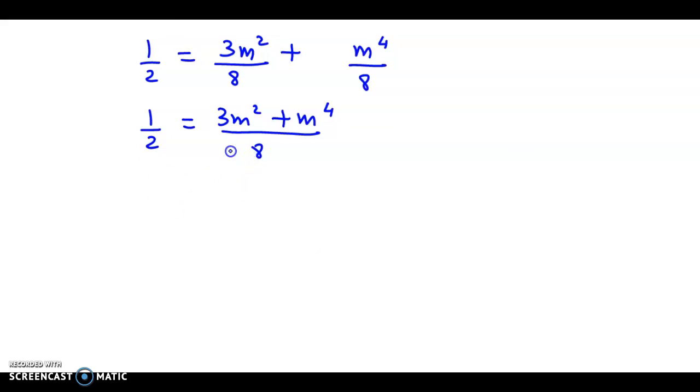Simplifying further, multiplying throughout by 8, so 8 times 1/2 is 4 = 3m^2 + m^4. Let us solve this equation.